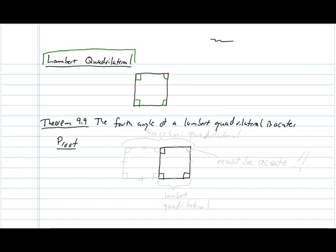What we're going to do is we're going to take a Lambert quadrilateral, as we have here, and we are going to reflect it. Or we're going to extend the bottom and the top so that this side has the same length as this side, and this side has the same length as this side.